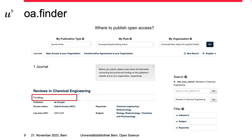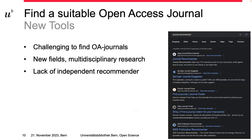Maybe you are already beyond choosing pathways and have decided to publish all your research in fully Open Access journals — that is wonderful to hear, though it brings its own challenges. Like, where can you find suitable Open Access journals that fit the quality standards of research? Especially where to find journals if you are working in a rather new field of research or if you engage in multidisciplinary research. There are many recommenders and suggestors out there, but as you can see in the screenshot, they are mostly products by big publishers. So there is not only a lack of independent recommenders, but especially ones that present Open Access journals.